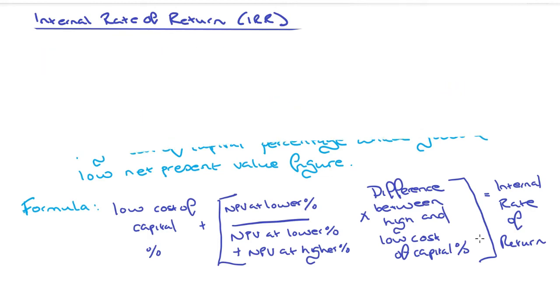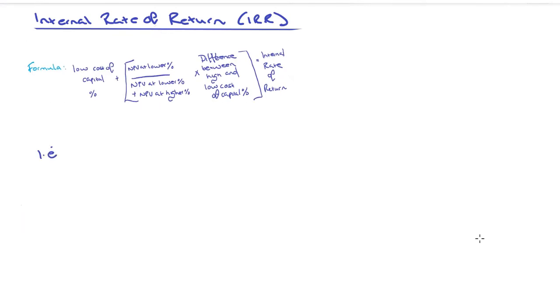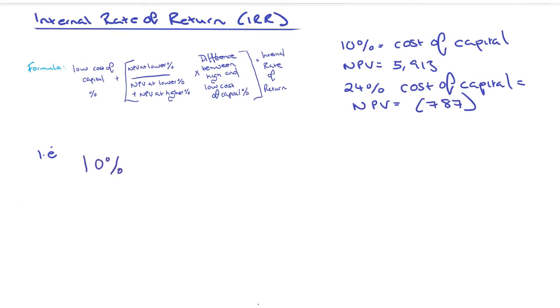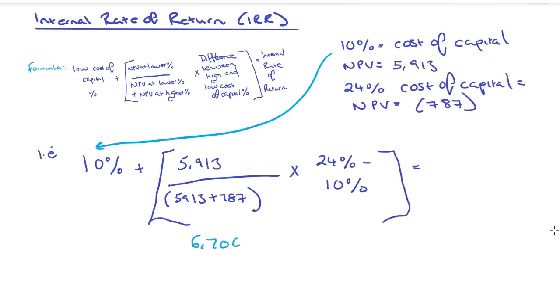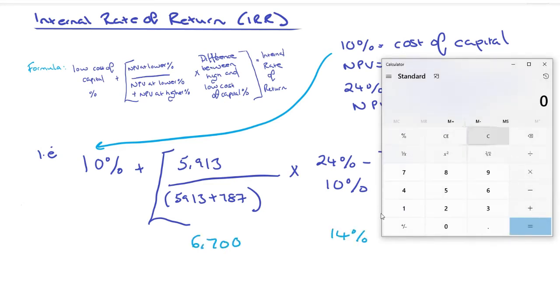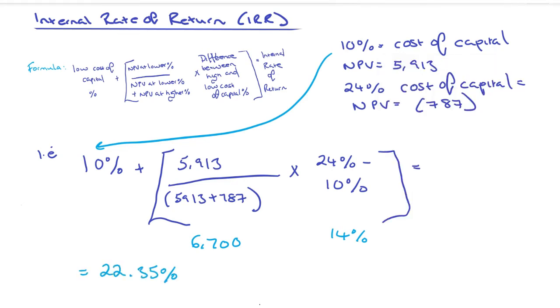Here's an example: imagine cost of capital is 10%, net present value is £5,913, and we have a 24% cost of capital where the net present value would be negative £787. We'd have 10% at the start because that's the low cost of capital percentage, then add the low net present value, 5,913, and divide that by 5,913 plus 787, which is the highest cost of capital net present value. Times that by the difference between 24% and 10%, which is 14%. Overall, that would give me 22.35%, or 22% to the nearest percentage.